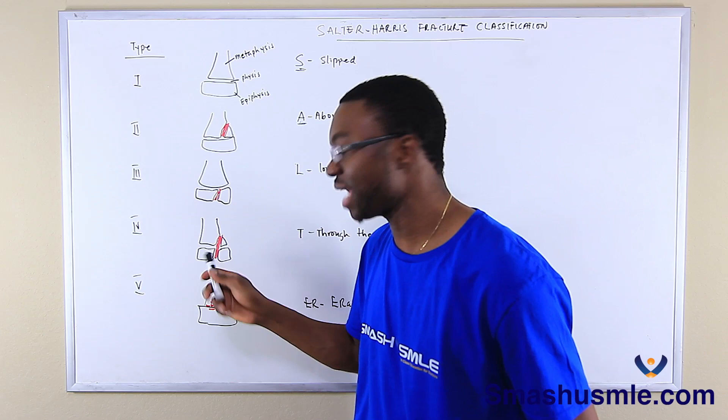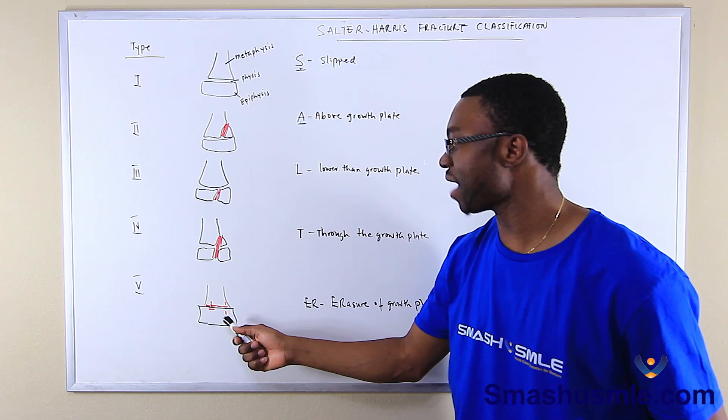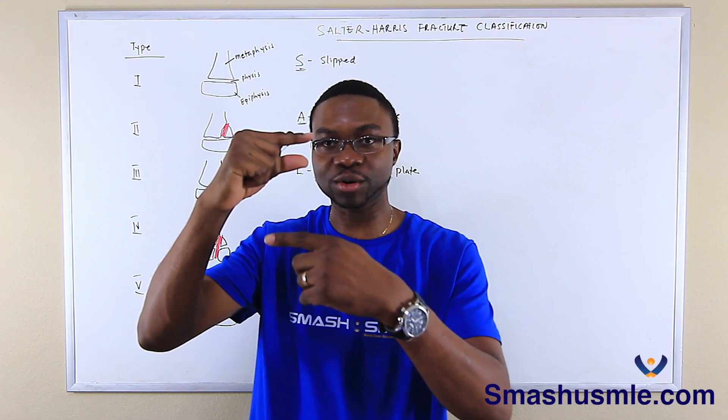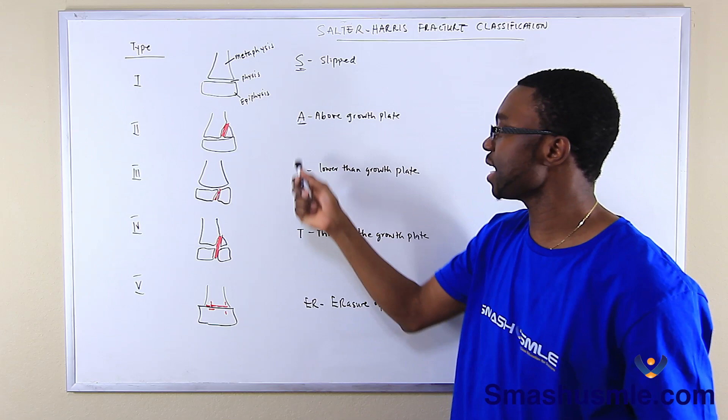Last but not least is type five. Type five is ER — erasure of the growth plate. So when you don't see the growth plate anymore, that is ER. S-A-L-T-E-R: erasure of the growth plate.